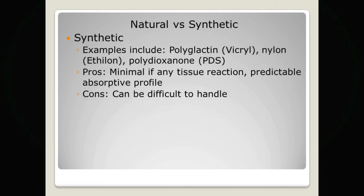More modern synthetic sutures include polyglactin, trade name Vicryl; nylon, trade name Ethilon; and polydioxanone, trade name PDS. Because of their synthetic nature, these sutures have minimal tissue reaction and tend to have a very predictable absorptive profile. Depending on how long the suture is needed to hold the tissue together will determine which suture is used. One downside is that synthetic sutures other than Vicryl can be difficult to handle because they are monofilament.